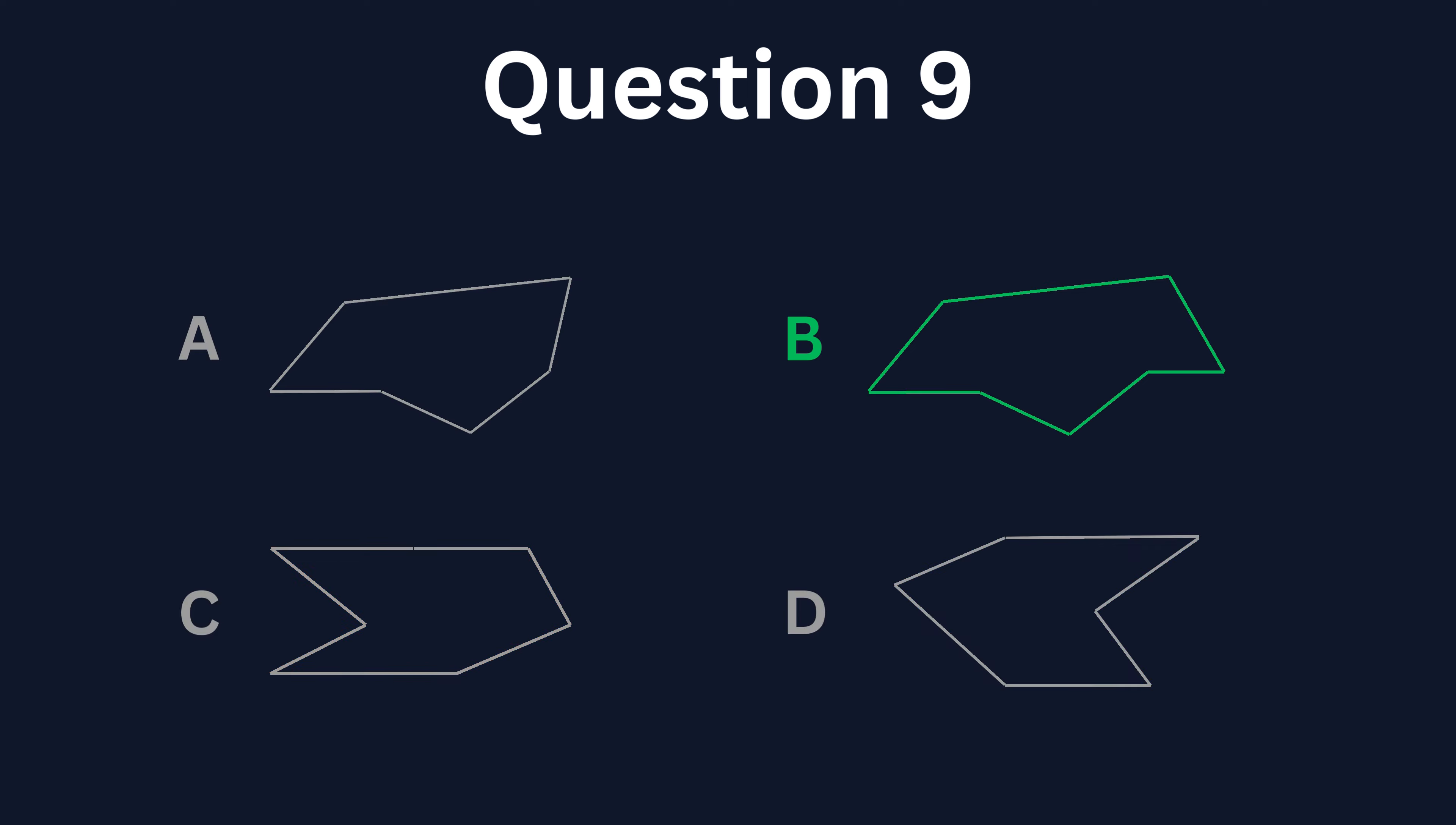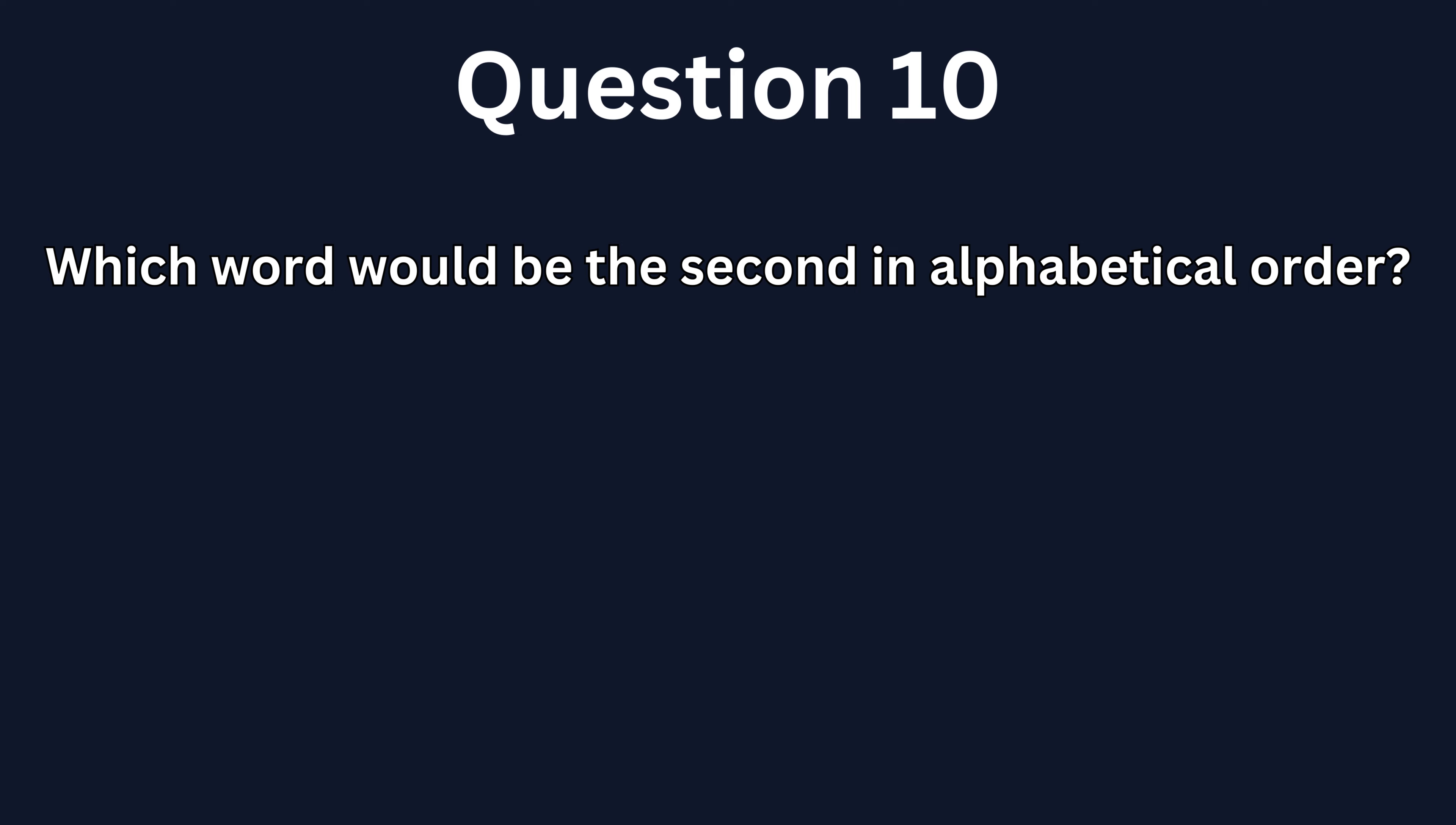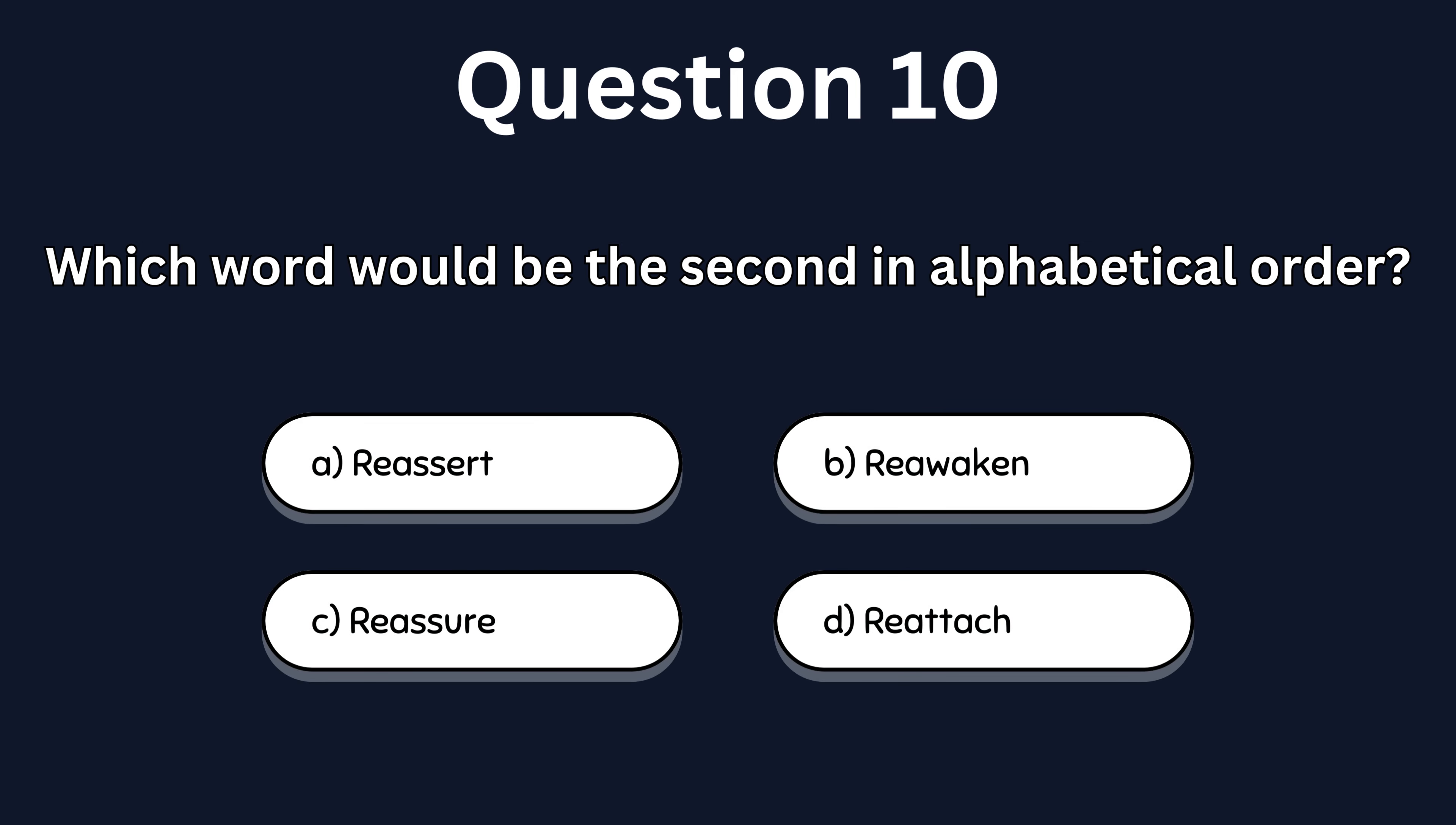The correct answer is B, because all the other shapes have 6 sides and B has 7. Question 10. Which word would be the second in alphabetical order?